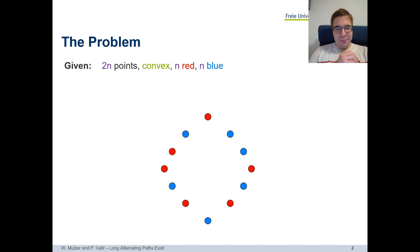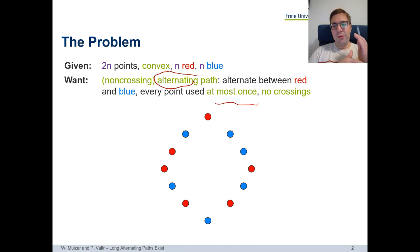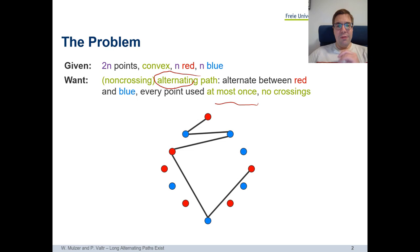For example, here we have an input of 12 points: six of them are red and six are blue, and they are in convex position. What we want is to find an alternating non-crossing path on this point set. Alternating means the path has to alternate between red and blue points, switching between red and blue at every point. The path should use each point at most once, and there should be no crossings — two edges should not intersect unless they share a common endpoint.